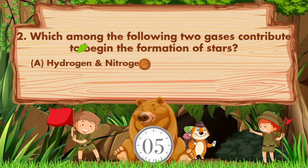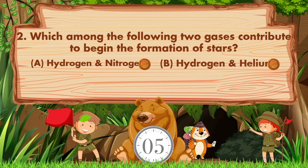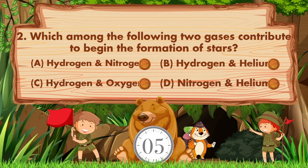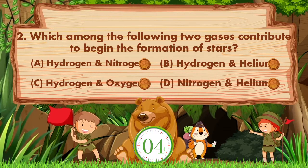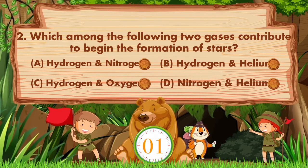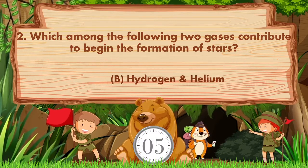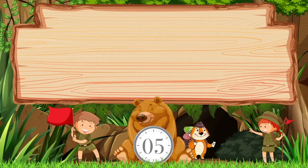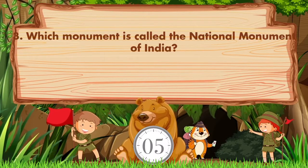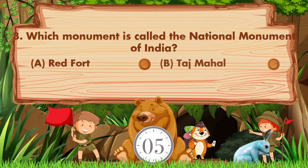Which among the following two gases contribute to the formation of stars? Option A: Hydrogen and Nitrogen, B: Hydrogen and Helium, C: Hydrogen and Oxygen, D: Nitrogen and Helium. Answer is option B, Hydrogen and Helium.